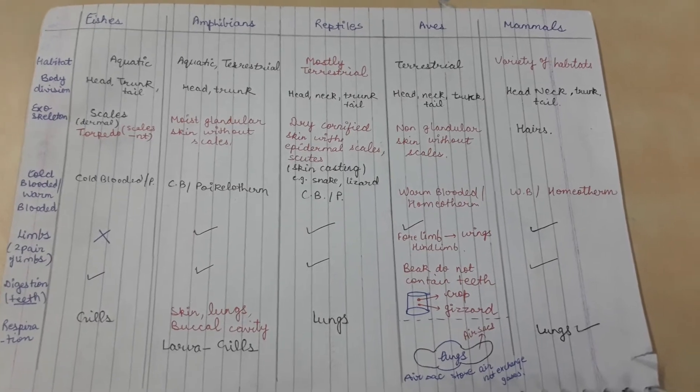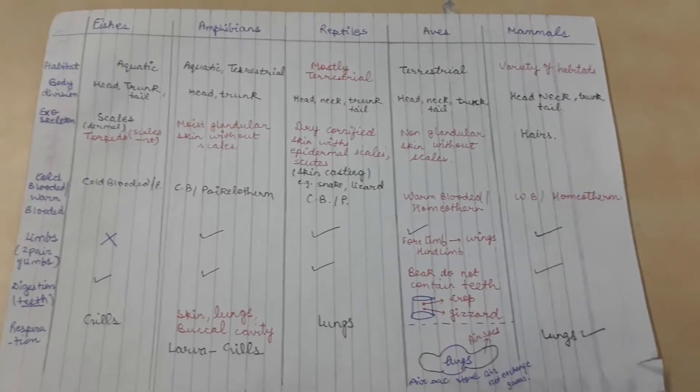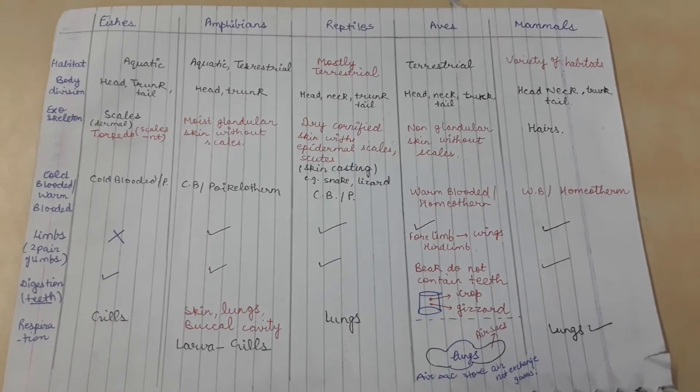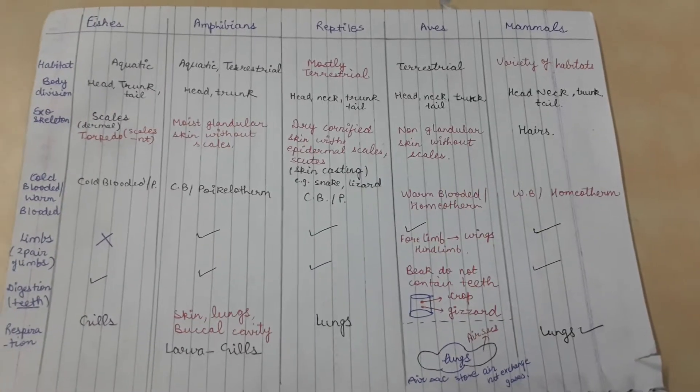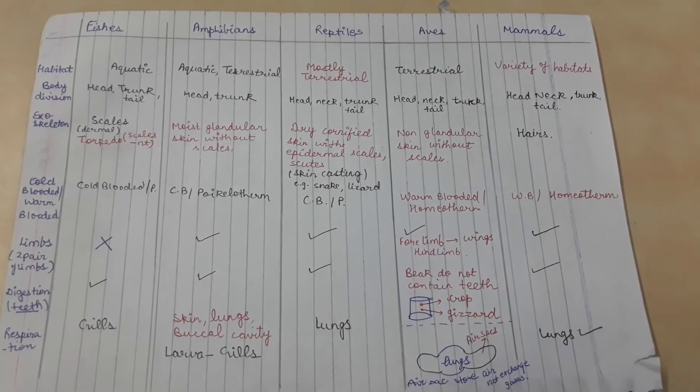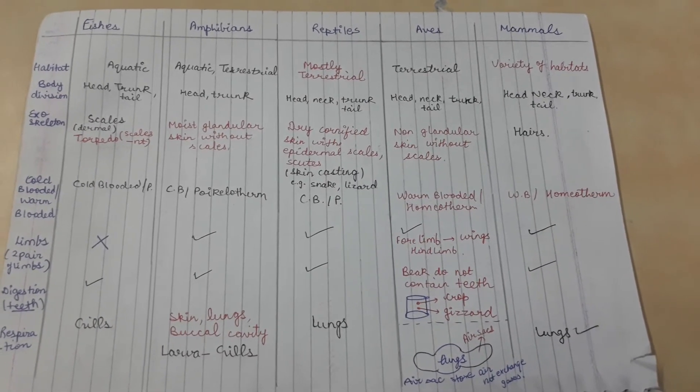Aves and mammals are homeotherms or warm-blooded. About limbs: fishes don't have any limbs, amphibians do have limbs, reptiles have limbs. In aves, the forelimbs and hind limbs are modified into wings, and mammals also have limbs.